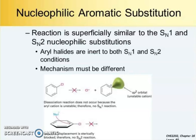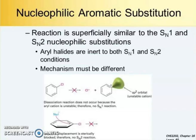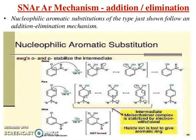There is no chance of SN1 and no chance of SN2. So the mechanisms involved are: SNAr — addition elimination; benzyne mechanism — elimination addition; and SRN1 mechanism.